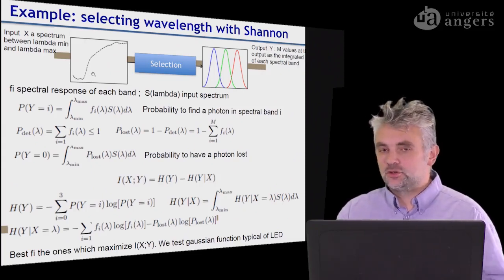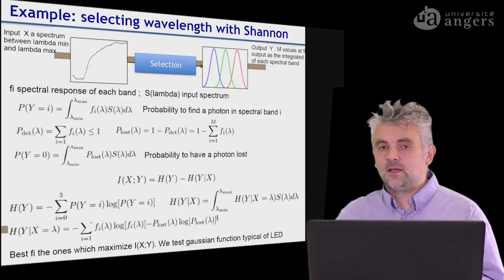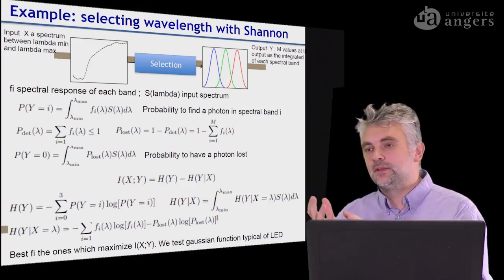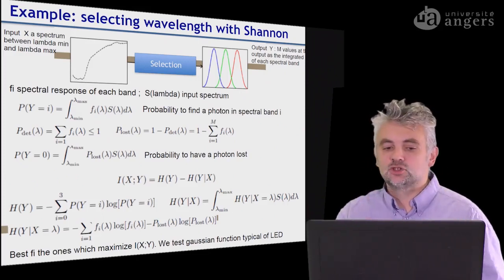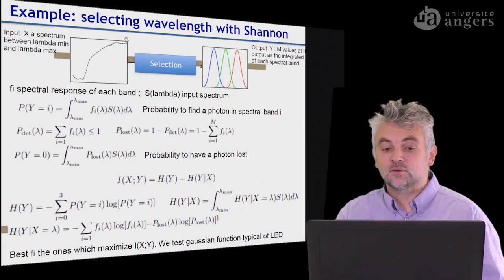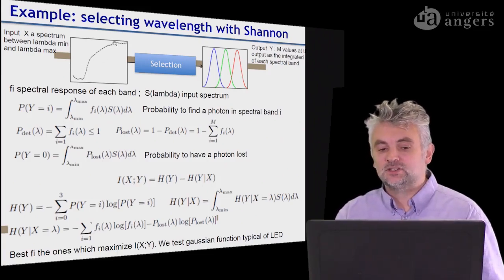So the approach, the problem is the following. You have a continuous spectrum at the input and your problem would be to avoid using a camera that produces this huge amount of data. So this is information that would be on one single pixel of hyperspectral imaging.